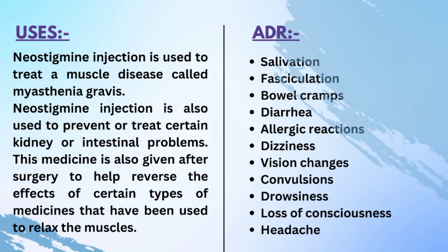Uses and adverse effects of Neostigmine: Neostigmine injection is used to treat the muscle disease called myasthenia gravis. Neostigmine injection is also used to prevent or treat certain kidney or intestinal problems. This medicine is also given after surgery to help reverse the effect of certain types of medicine that have been used to relax the muscles. Adverse effects include salivation, diarrhea, allergic reaction, vision changes, dizziness, loss of consciousness, and headache.